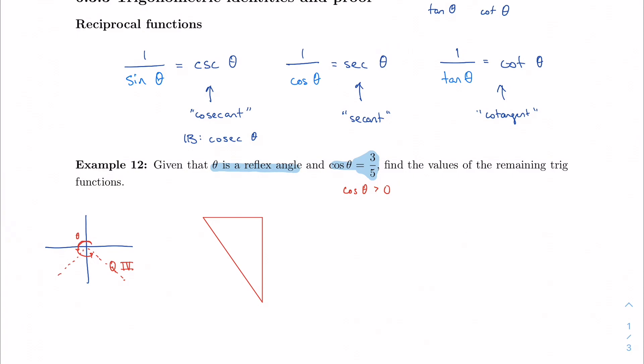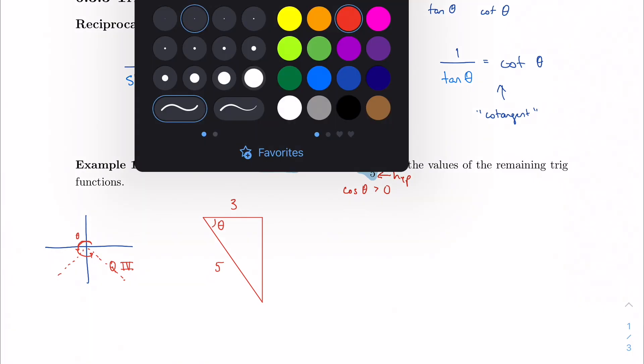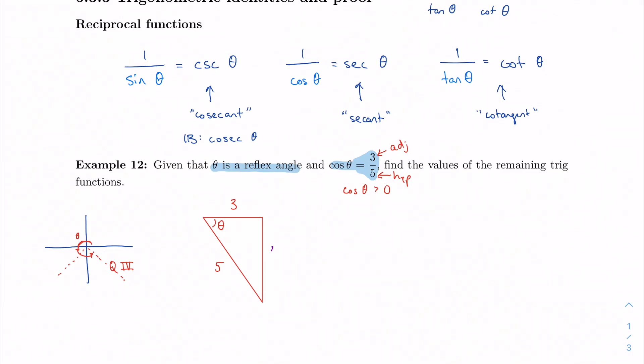So sometimes I like to draw my triangle so that it's actually oriented as if it were in quadrant 4. So here is my triangle in quadrant 4. Here is my reference angle. And cosine is 3 fifths. Since cosine is adjacent over hypotenuse, let's call 3 my adjacent side and 5 my hypotenuse. And based on the Pythagorean theorem, then, that makes this missing side, my opposite side, 4.